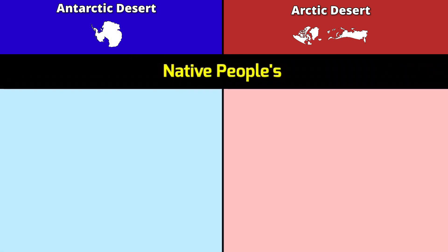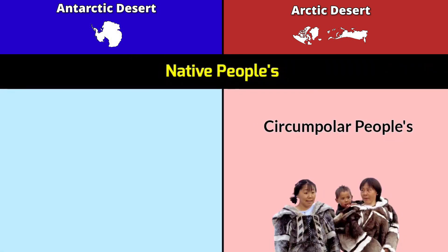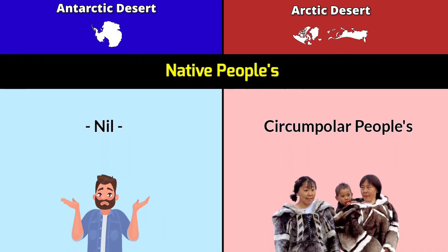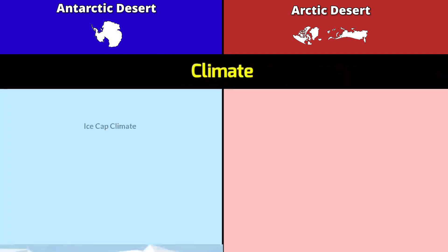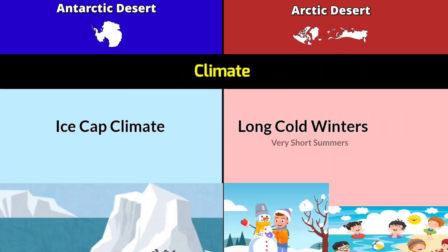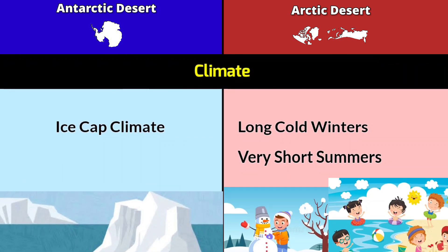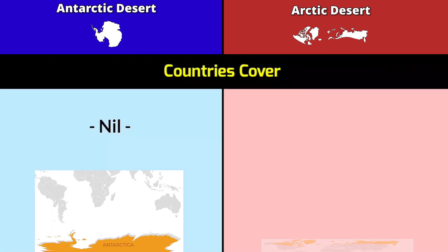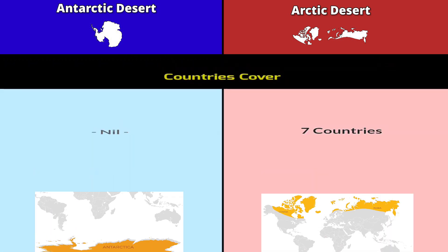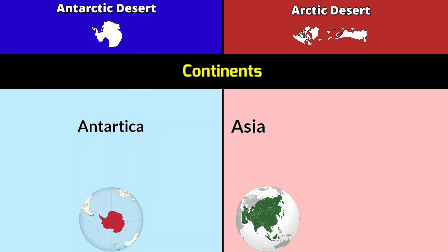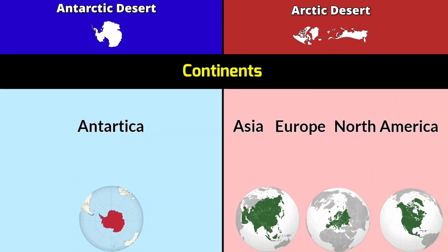Native peoples: Arctic has circumpolar peoples; Antarctica does not have any native peoples. Climate: ice cap climate with long cold winters and very short summers. Number of countries covered: Antarctica — 0; Arctic — 7 countries. Continents: Antarctica, Asia, Europe, and North America.